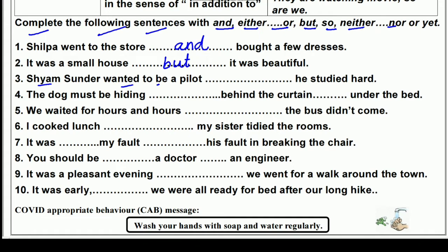'Shaan Sundar wanted to be a pilot __ he studied hard.' Since we need to show a result, we use 'so' — Shaan Sundar wanted to be a pilot, so he studied hard. Next: 'The dog must be hiding __ behind the curtain __ under the bed.' Here 'either...or' fits — either behind the curtain or under the bed.